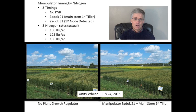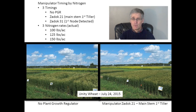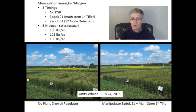The first trial looked at three timings of Manipulator by three nitrogen rates. The timings were: no Manipulator at all, Zadok 2-1 at herbicide timing, and Zadok 3-1 at the ideal timing. These timings were evaluated under three nitrogen rates from 100 to 150 pounds per acre of nitrogen — basically trying to create an environment where the plants would lodge. The variety grown was Unity, which is only rated as fair in terms of resistance to lodging. As you can see from the picture taken on July 24th, the Unity wheat has started to lodge fairly early.